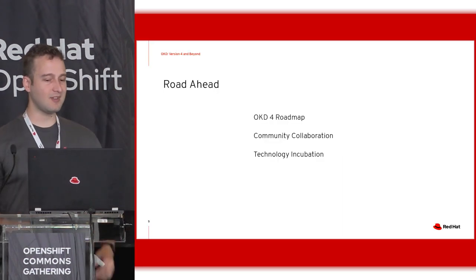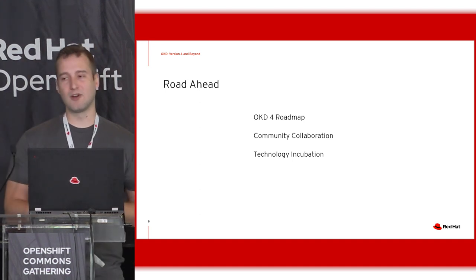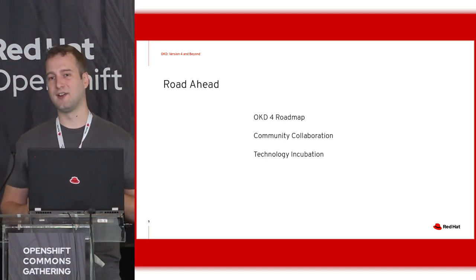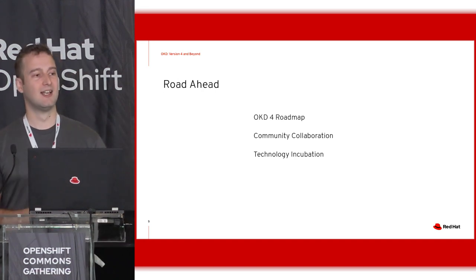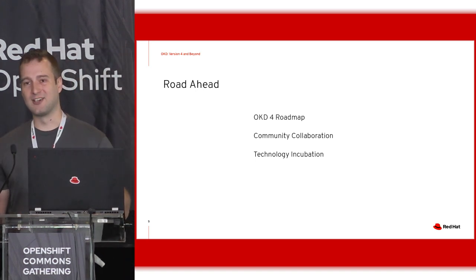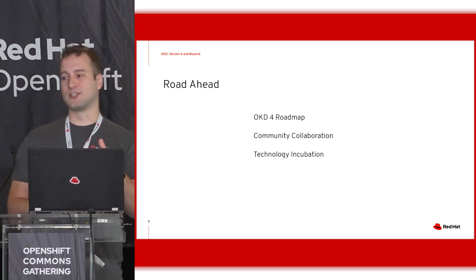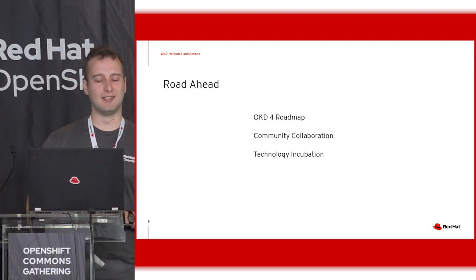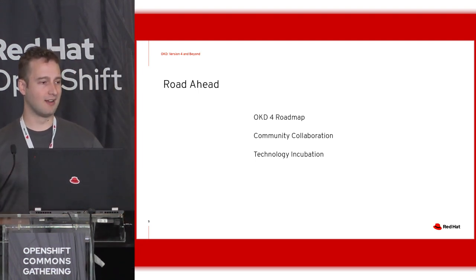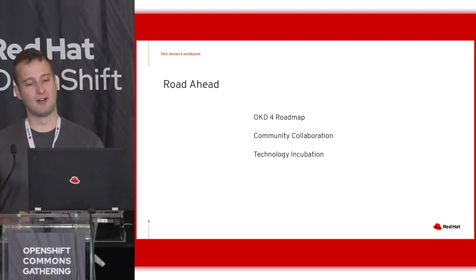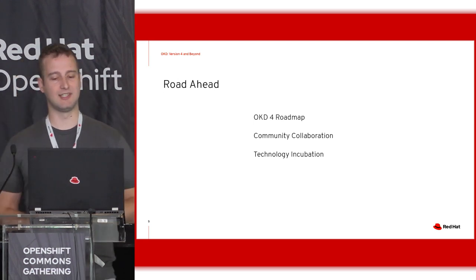The road ahead: in the OKD working group, we've agreed on a roadmap for version four with three phases. Phase zero was the internal preparation to get the alpha out — and we've done that, phase zero ends today. We're starting phase one now, which is working towards a GA release with a bit more stability, building things out a bit more, improving the CI, and doing things how we want them to look in the long run.